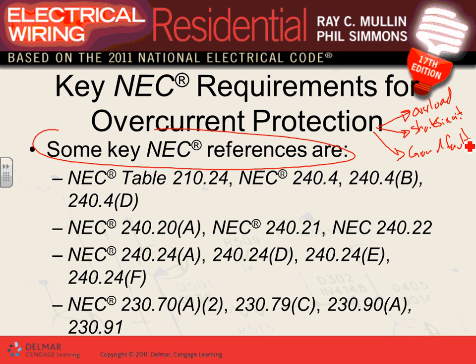Ground fault: when you have a hot or phase conductor touching a grounded object such as an equipment ground conductor or enclosure, you get a lower overcurrent than a short circuit — typically lower, but it depends on the impedance of the conduit and the contact point.